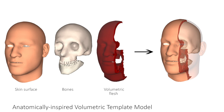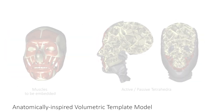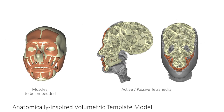Our approach starts with a generic face model — an anatomical face template corresponding to an average human subject — which has four components: bones, skin, muscles, and fat. We generate a tetrahedral mesh of the soft tissue of the face, which conforms to the skin and bones. We distinguish between two types of soft tissue. We non-conformally embed the muscles into the volumetric mesh, obtaining the red region depicted on the right. The gray regions correspond to passive tetrahedra, representing subcutaneous fat.